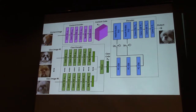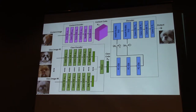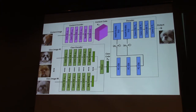This style vector is passed through a small fully connected network to compute AdaIN parameters — the mean and standard deviation — which control the behavior in the decoder. The decoder takes the content code and applies a series of AdaIN residual blocks, where the normalization layer is replaced with AdaIN: the activation is first normalized to zero mean and unit variance, then transformed using the learned mean and variance.